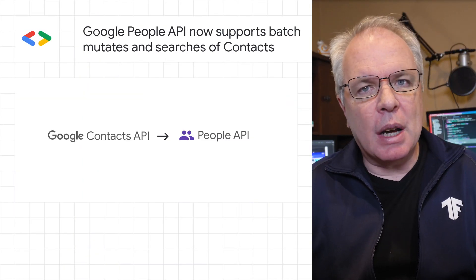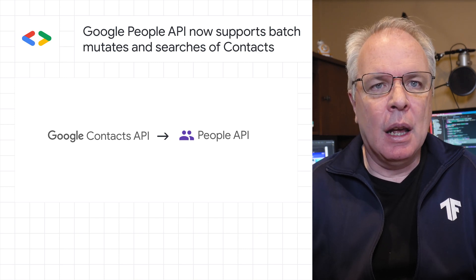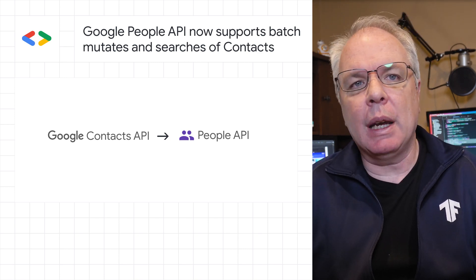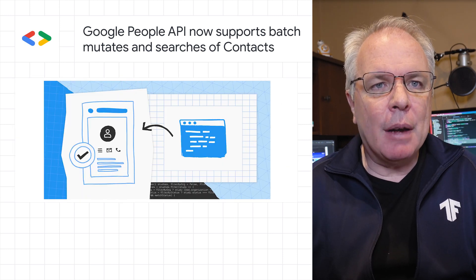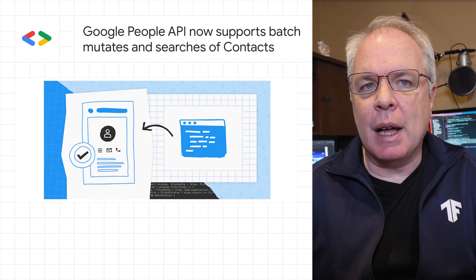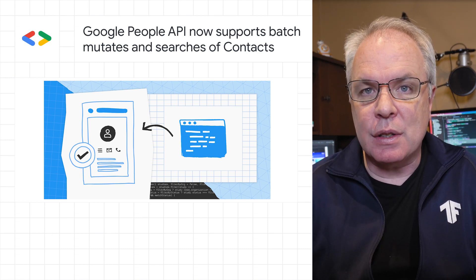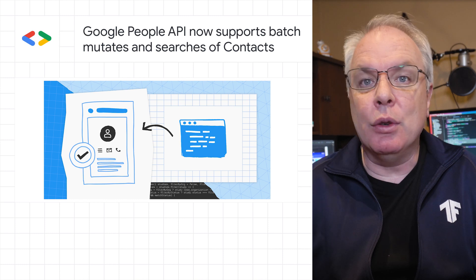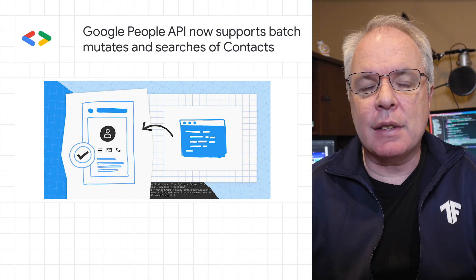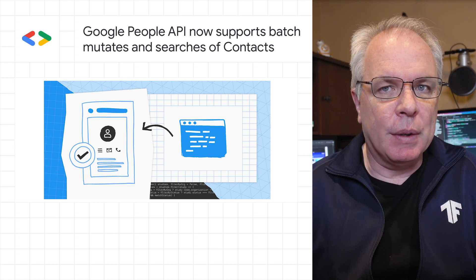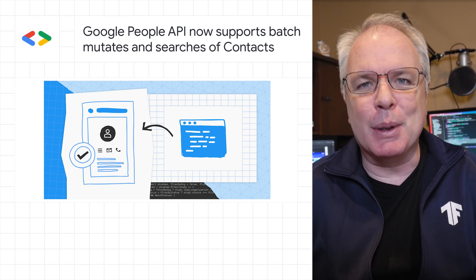To aid in the process of migrating from Google Contacts API to the People API, we've added two new sets of endpoints for working with contacts via the People API. First, we now have new write endpoints that allow developers to create, delete, and update multiple contacts at once. In addition, we also have new read endpoints that allow developers to search a user's contacts using a prefix query. Head to the post and read more about these new endpoints and how to get started with the People API.